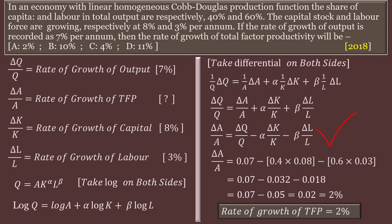Now substitute the values. Delta A by A is what we need to find. Delta Q by Q is 7%, decimal value 0.07. Minus alpha, which is 40%, decimal value 0.4, times delta K by K, which is 8%, decimal value 0.08. Minus beta, which is 60%, decimal value 0.6, times delta L by L, which is 3%, decimal value 0.03. Simplifying: 0.07 minus 0.032 minus 0.018.